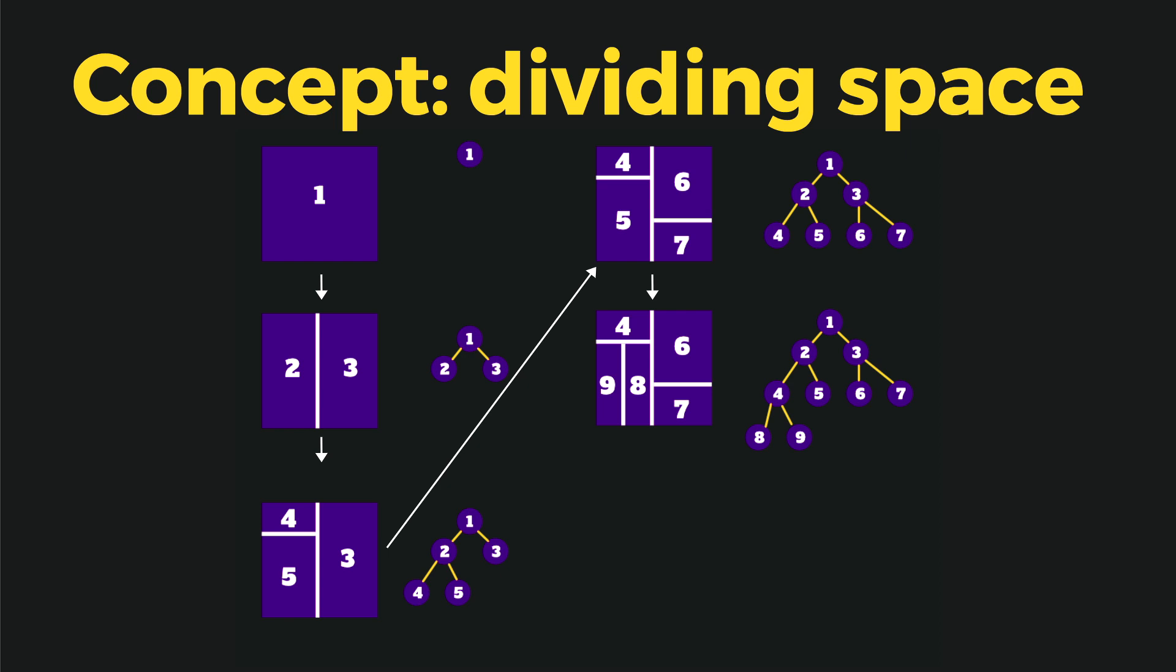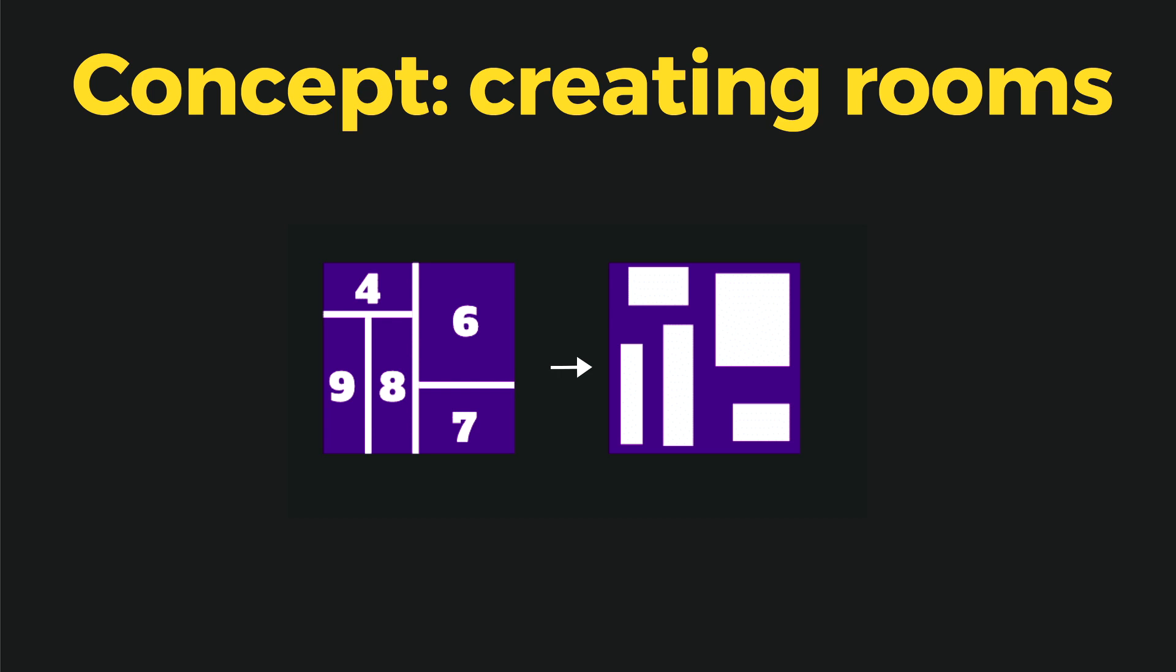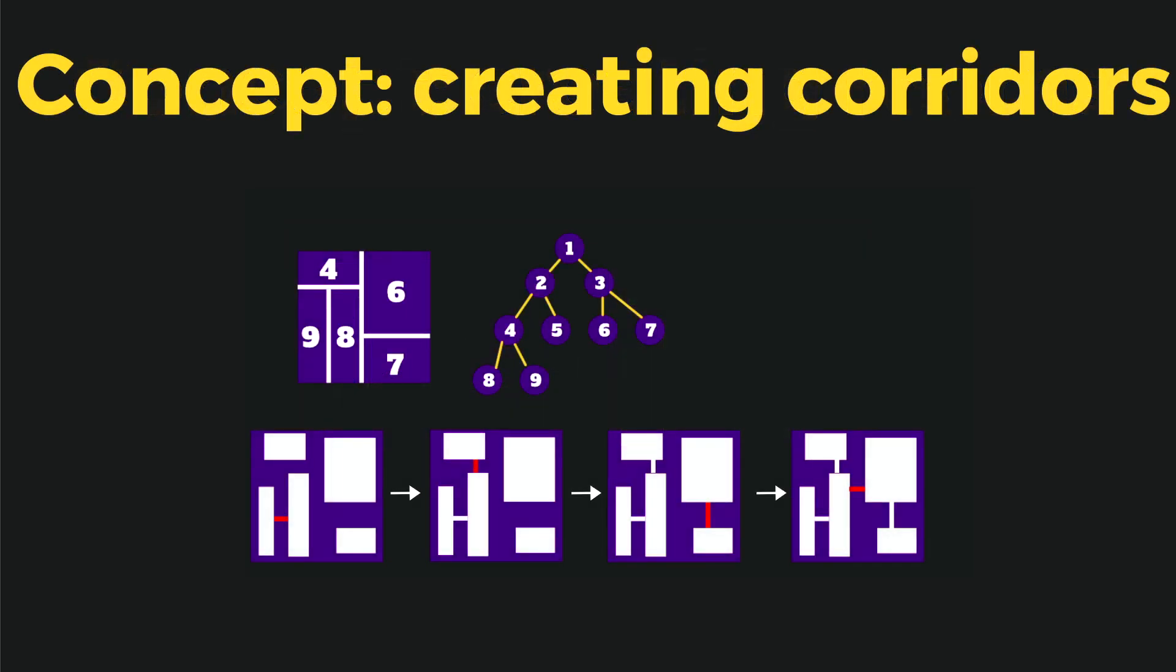Next step is to generate the rooms inside of our spaces. So we generate rooms randomly choosing their corners. And the last step is to create corridors between the rooms.